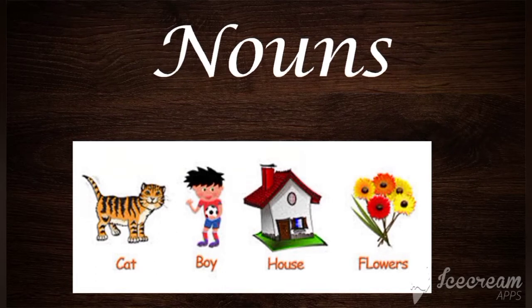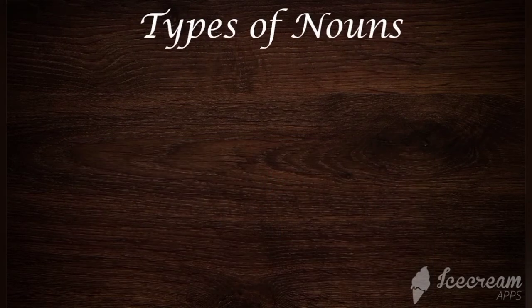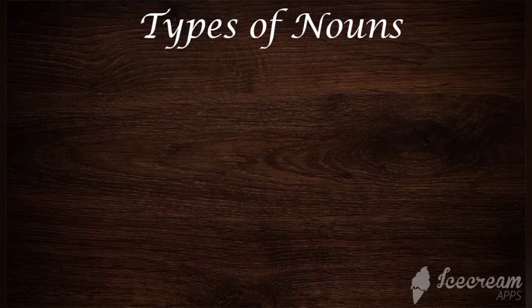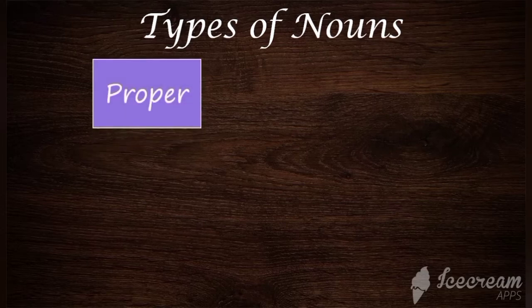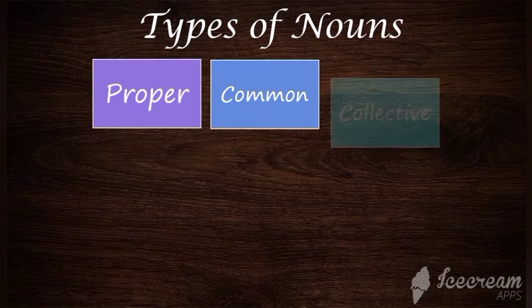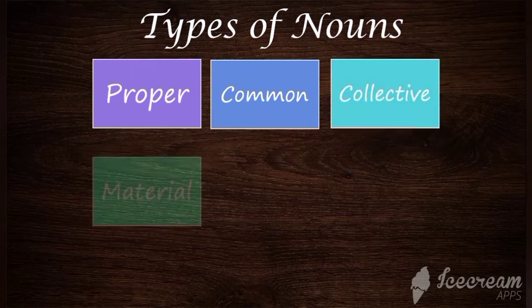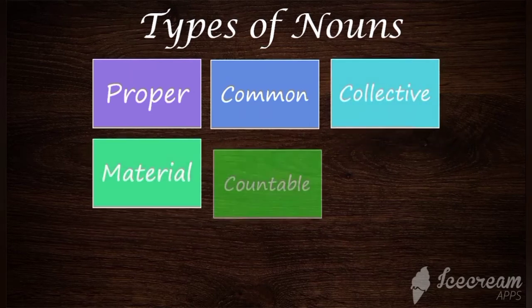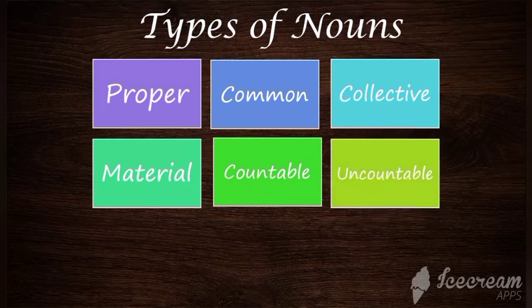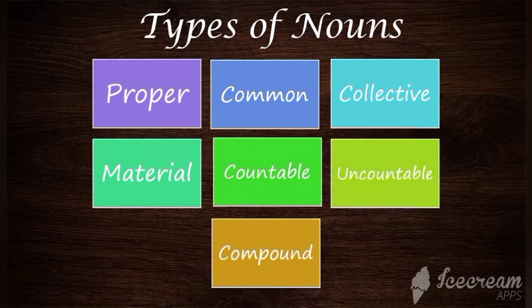Now we are going to study about types of nouns. Noun means name of a person, place, or a thing. There are seven types of nouns. They are: proper noun, common noun, collective noun, material noun, countable noun, uncountable noun, and compound noun.